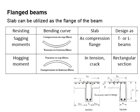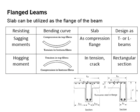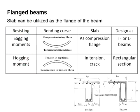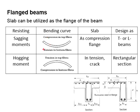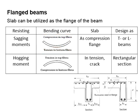To further understand the principle of the flange beam, you need to know these two terms: the sagging moment and the hogging moment. The sagging moment refers to a condition where the beam bends downward.